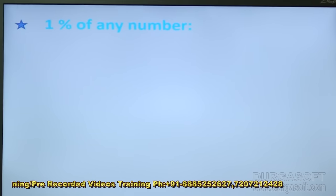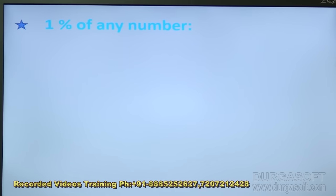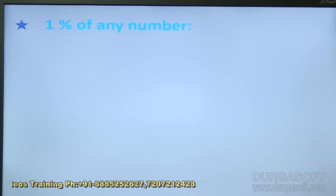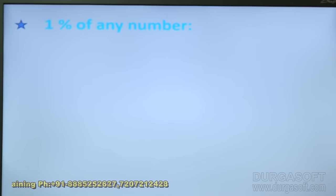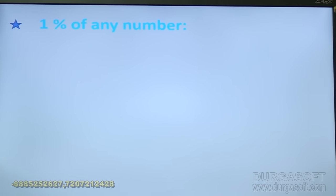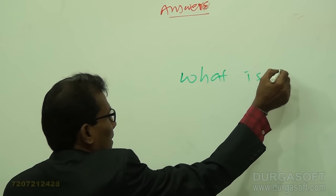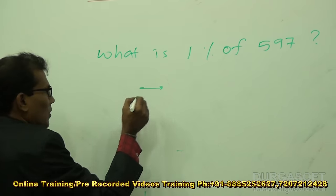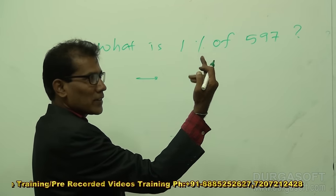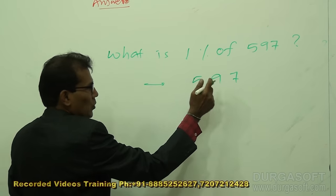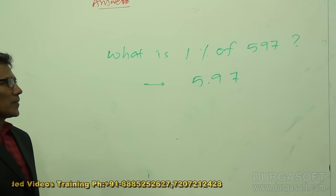For 1% of any number: just put a dot before two digits from the right hand. For example, 1% of 597 — count two digits from the right and place the dot, giving 5.97. For 10% you move one digit; for 1% you move two digits.